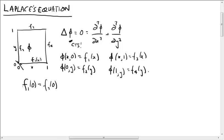So this should be true. We should also have f1 at 1 equals f4 at 0. That's this corner here. And similarly at the other two corners. So those are restrictions on the kind of functions I can put in.